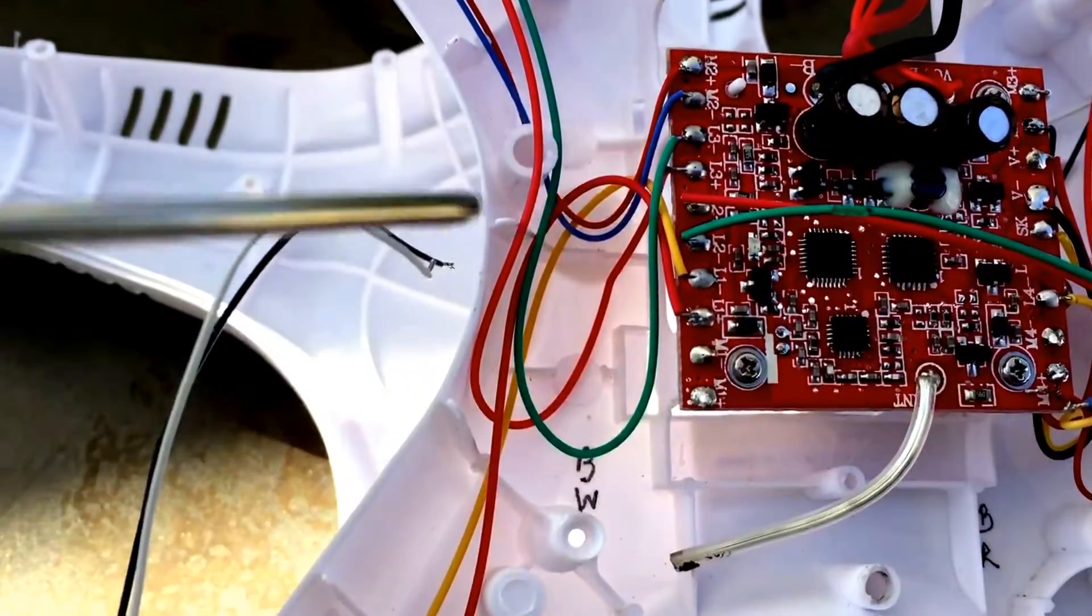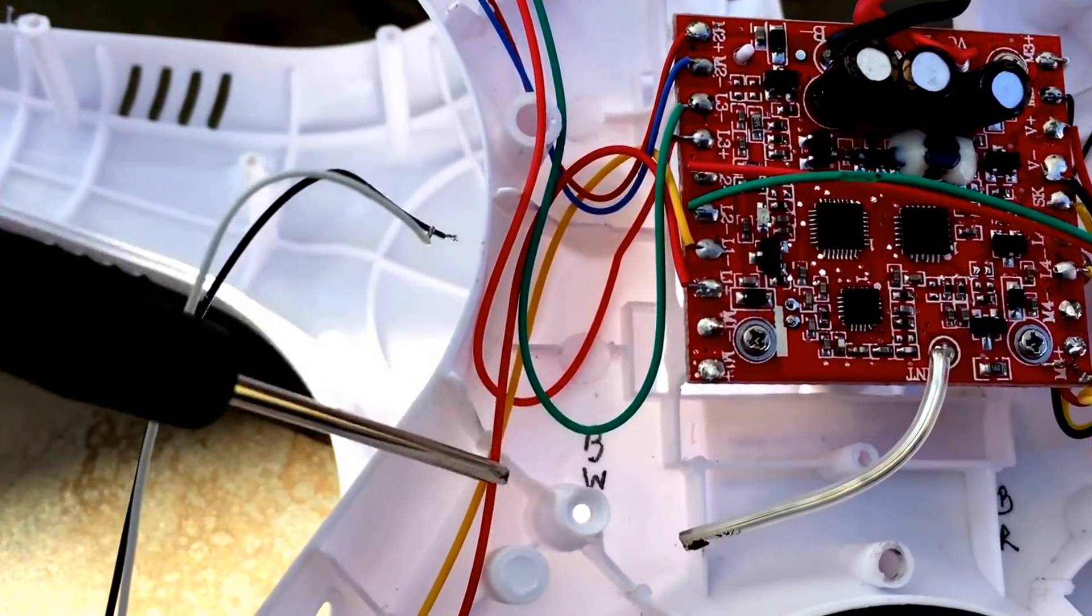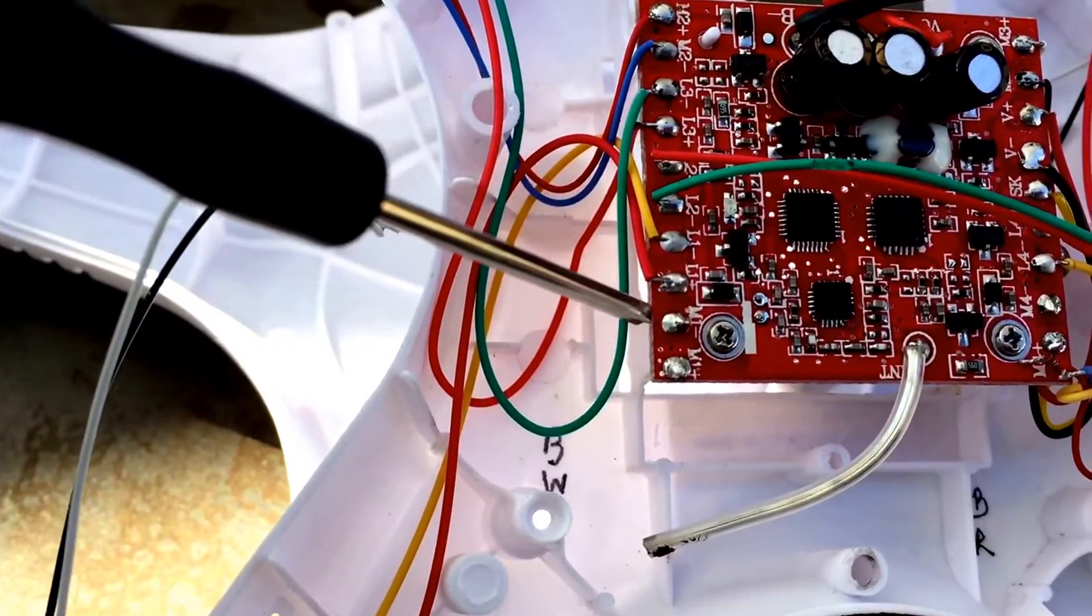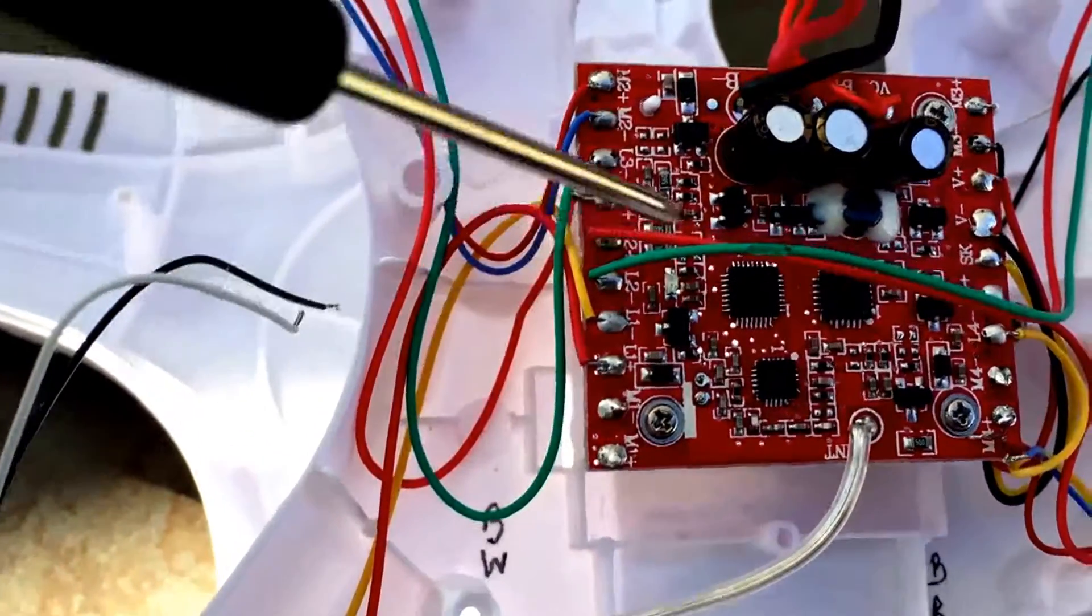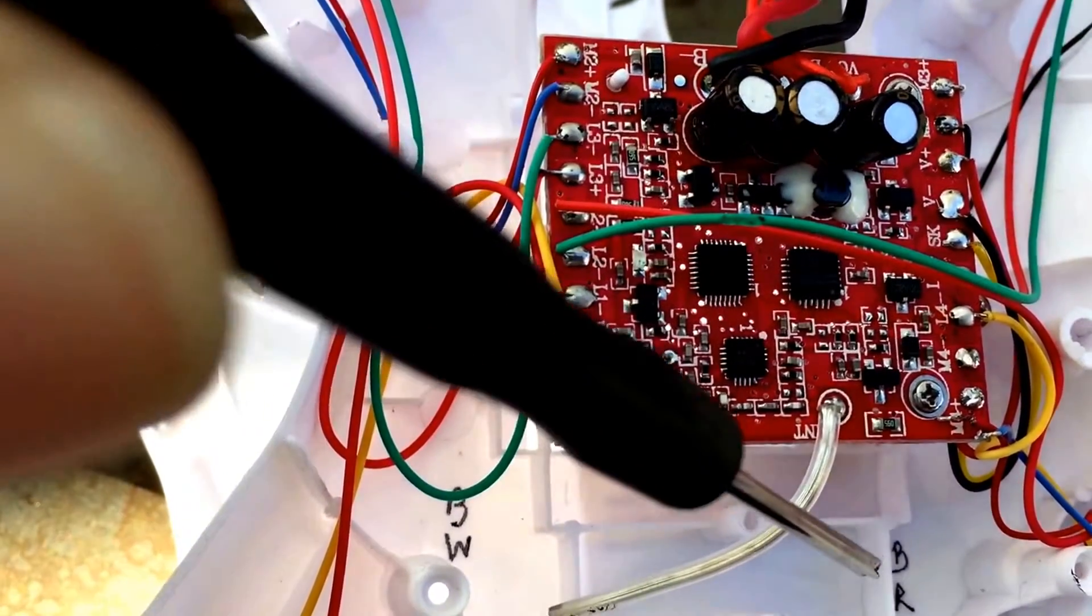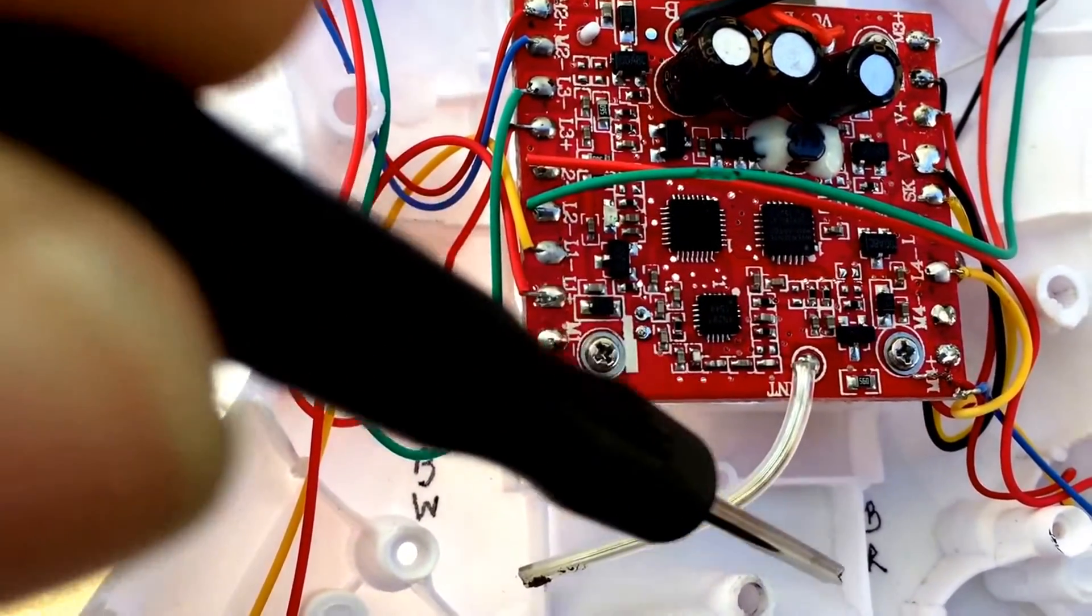Now you can see I've removed the leads and I wrote down here black-white, the black one's on top, the white one's at the bottom. Same thing on the other side, we had blue and red.